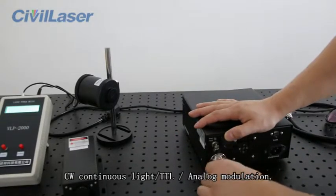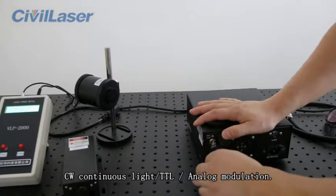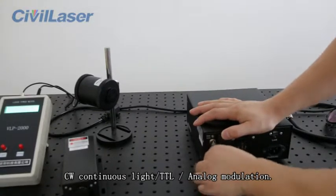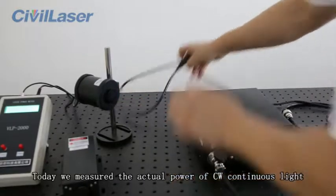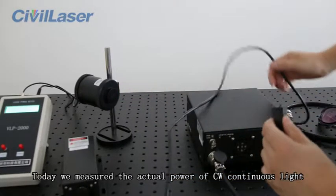CW Continuous Light Modulation, TTL Modulation, and Analog Modulation. Today we measure the actual power of CW Continuous Light.